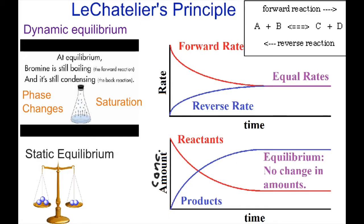Equilibrium simply happens when you have a reversible reaction and the forward and reverse processes are at equal rates. You must be careful, because even though the rates are equal, the concentrations will be constant — the concentrations are not equal, they tend to be constant. You must make that distinction.